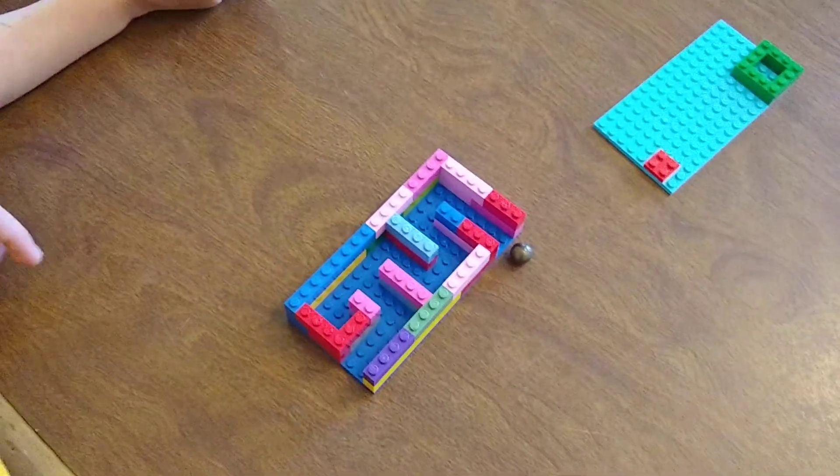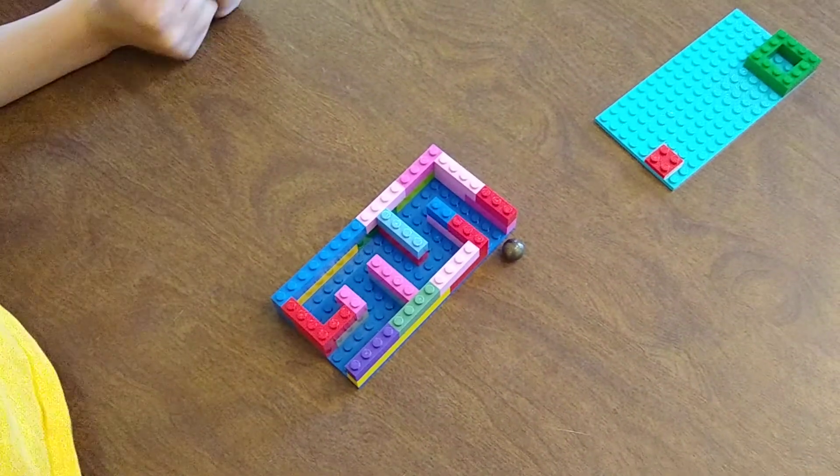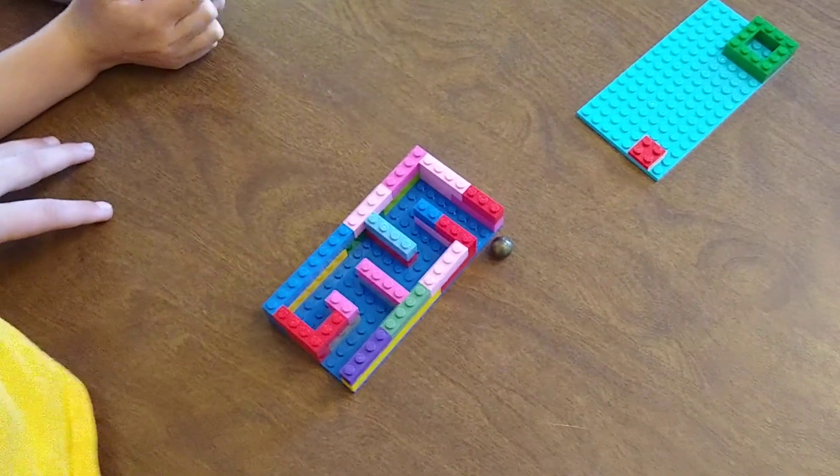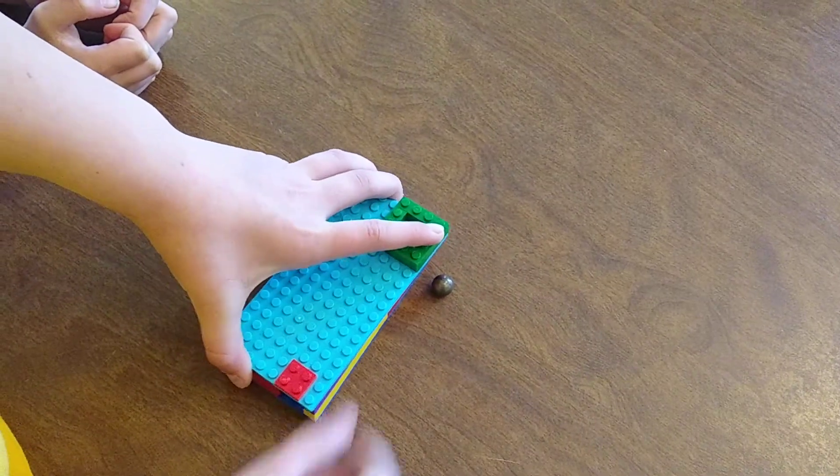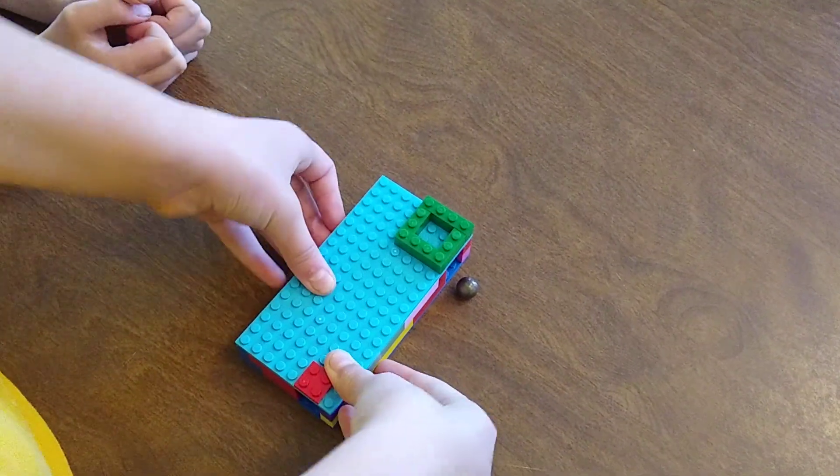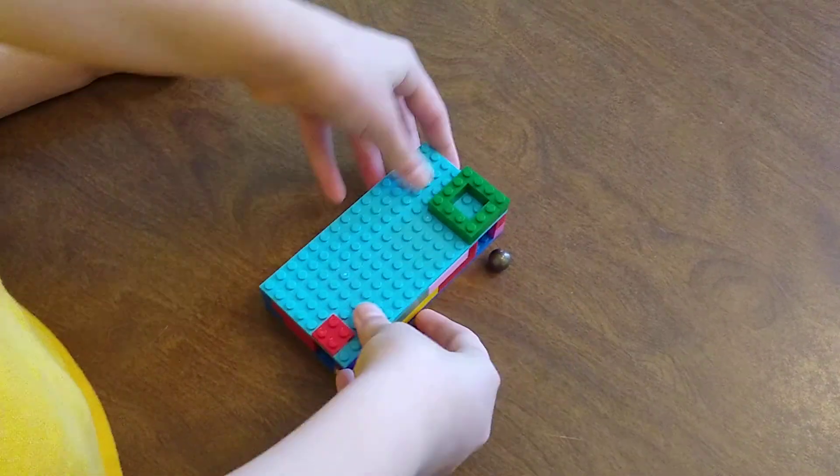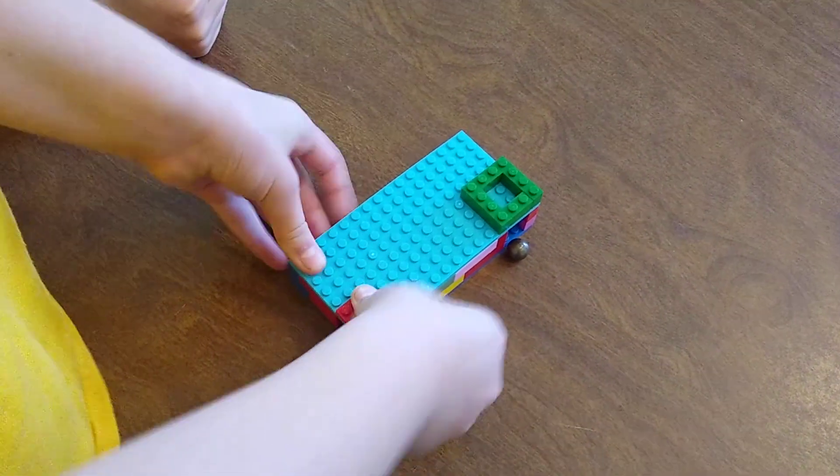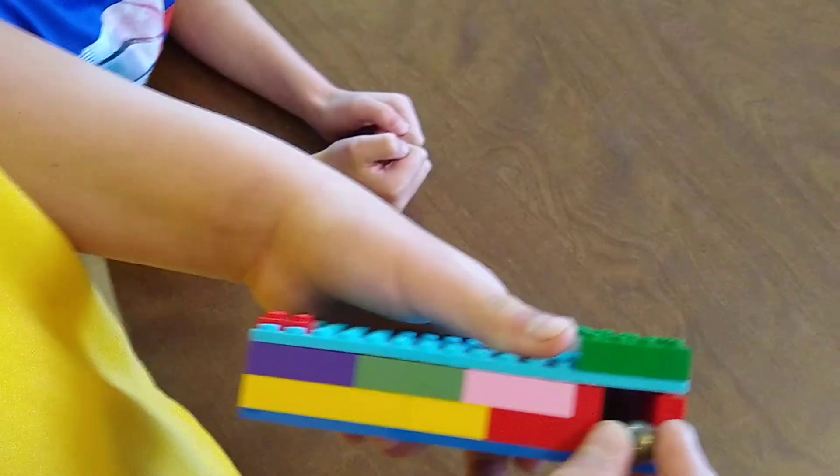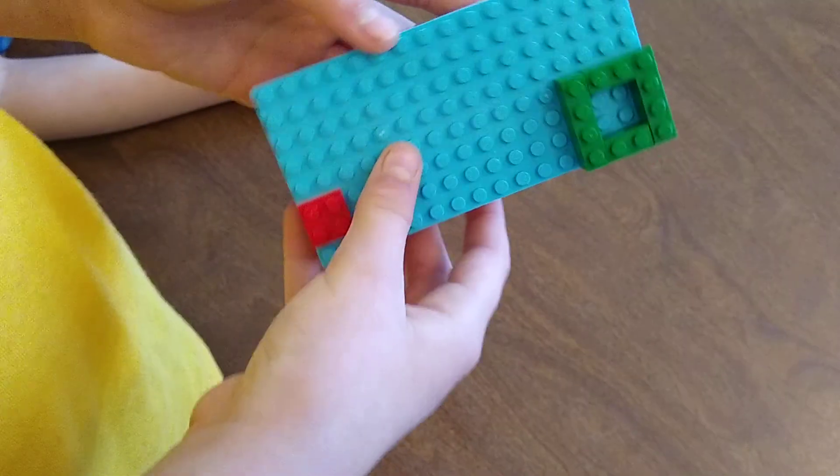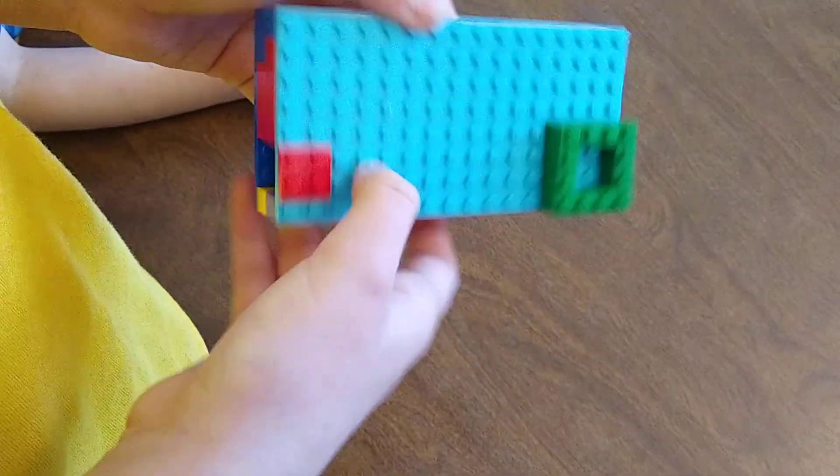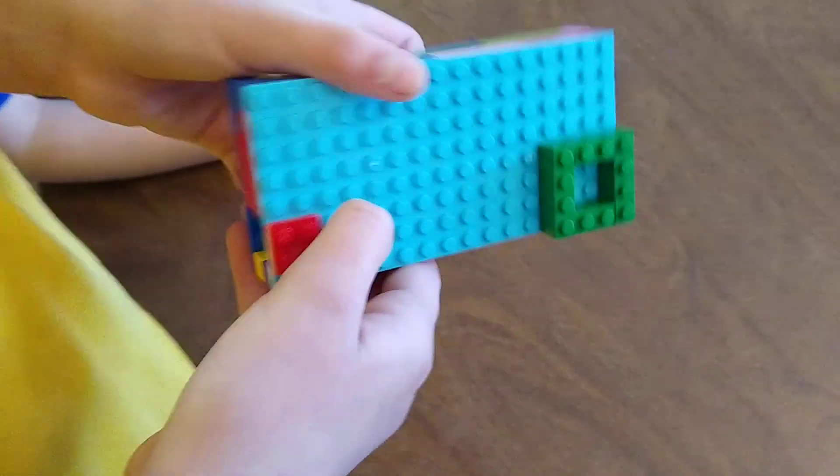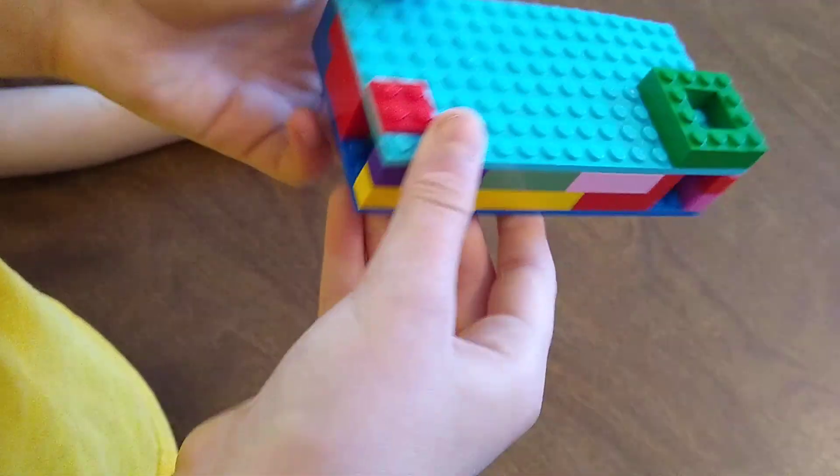That is just your standard labyrinth. Now, if you want to make it a little more complicated, you can cover it with a top. Now it is a black box, which means you can't see what's inside. You have to be able to determine from the outside what's inside. So now you put your marble into the starting hole, which we always label with green, and then you have to roll it around and just by feel, you have to find your way through the path.